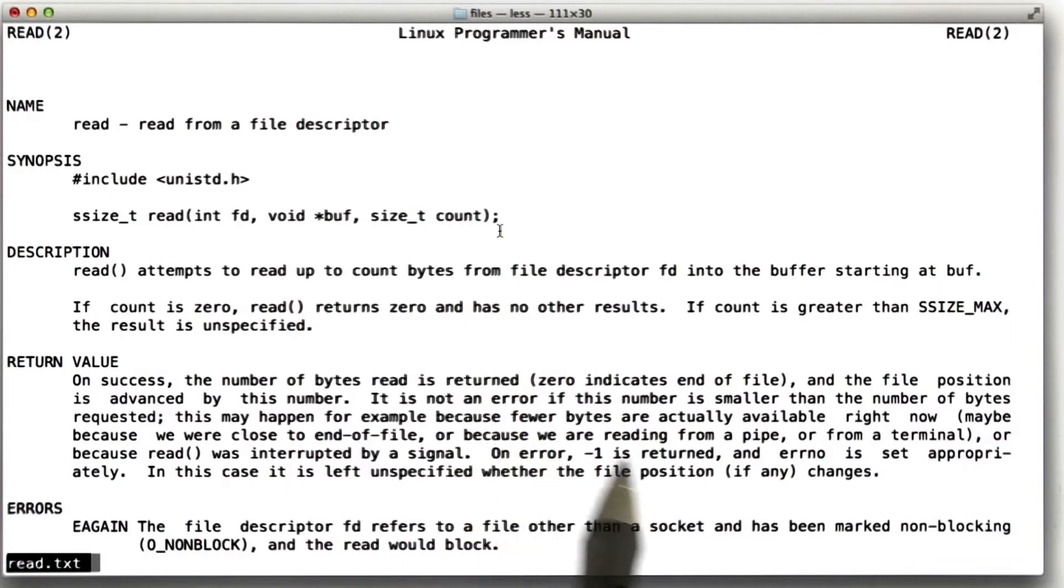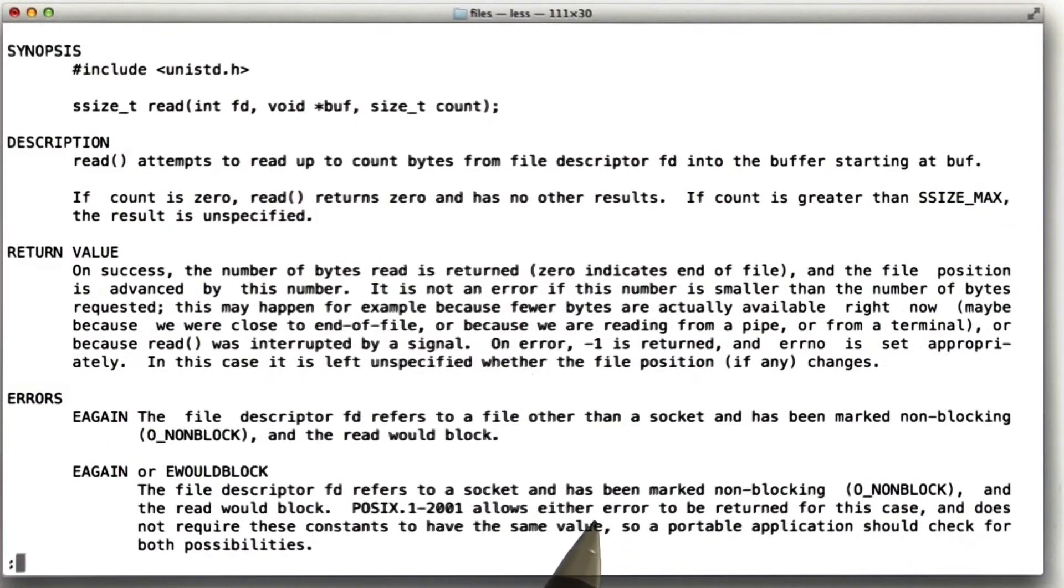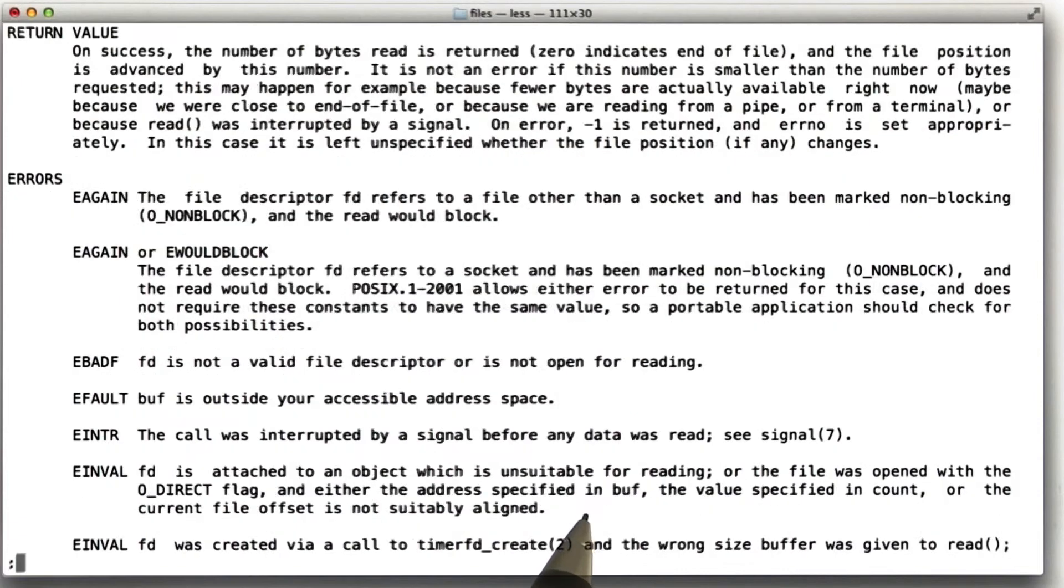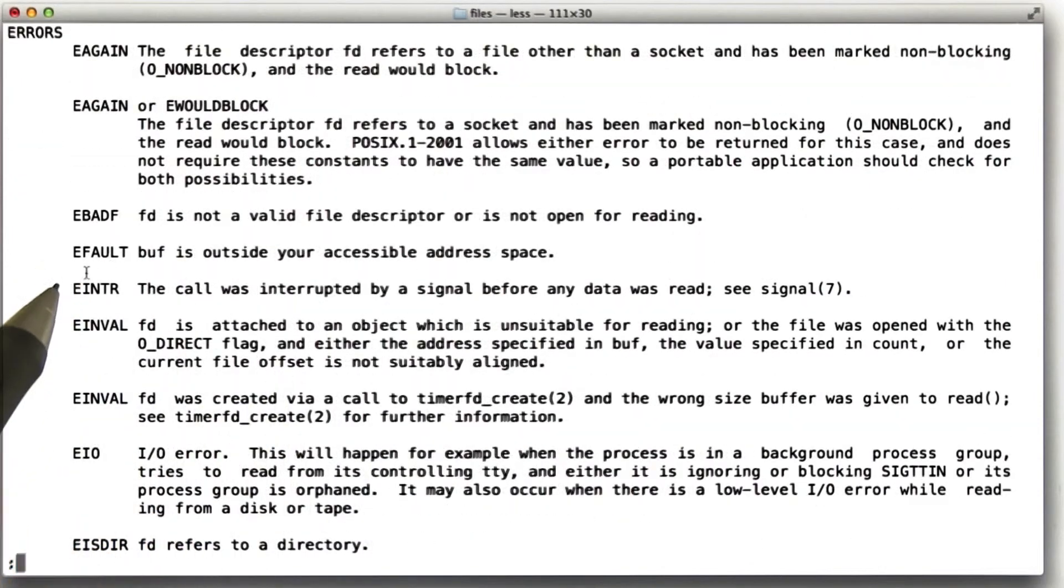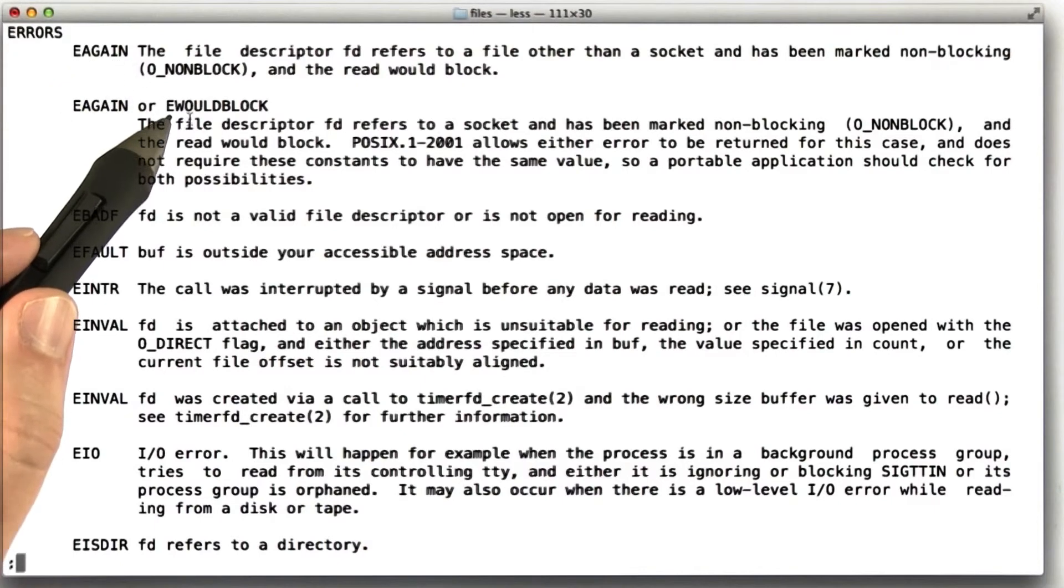Another thing that read can do is just fail outright. That is to say, it can return minus 1 to the application, but it turns out that there are a whole lot of different reasons for that kind of a failure. We can see here that there are at least nine different error conditions that read can return. We have e again, e would block, e bad f, e fault, etc.